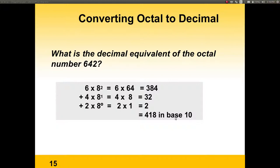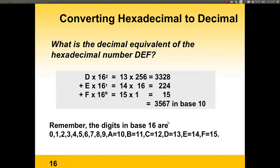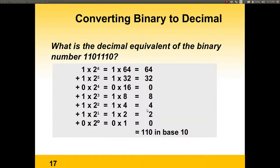How would we convert a number from a different base into decimal — base 10? For instance, 642 in base 8, or octal, would be 6 times 8 to the second power — which is 6 times 64 — which is 384. Then 4 times 8 to the first is 32. And 2 times 8 to the 0 is 2. So if we add them all up, we get 418 in base 10. So 642 in base 8 is equivalent to 418 in base 10.